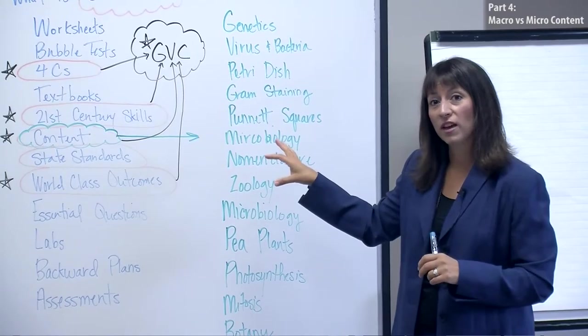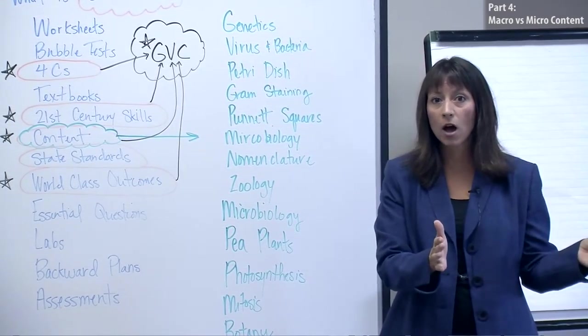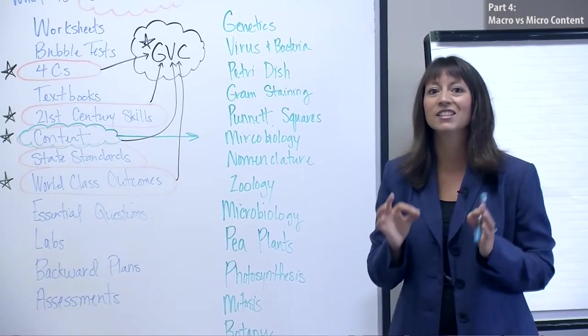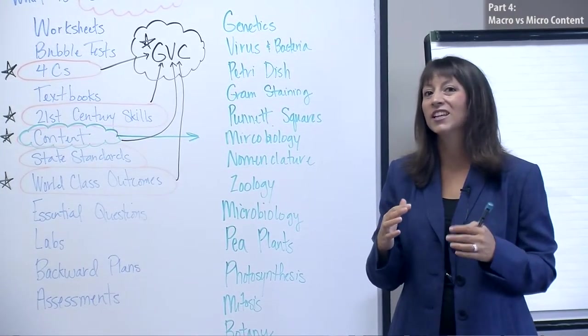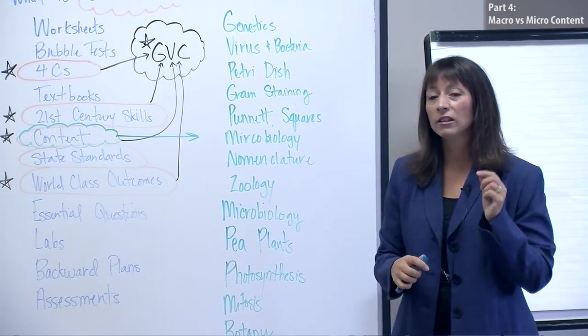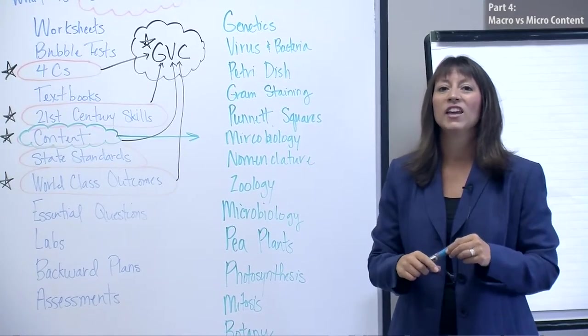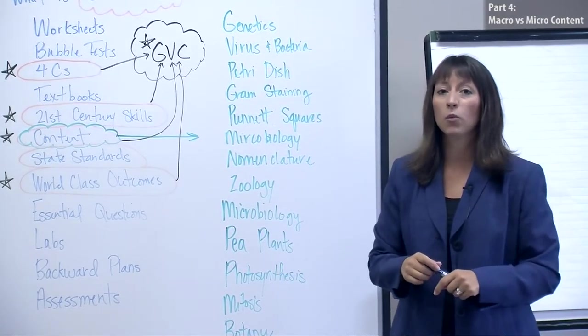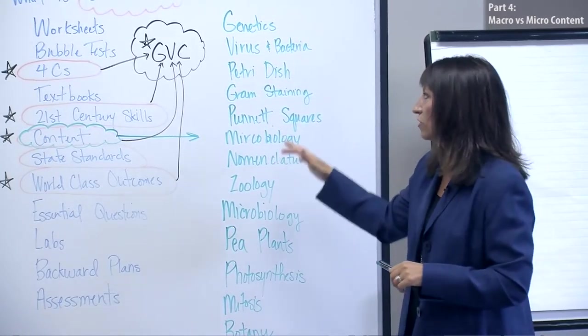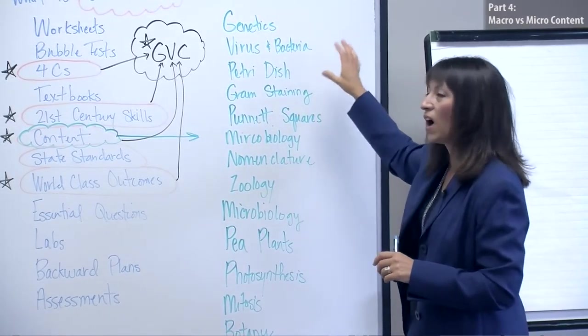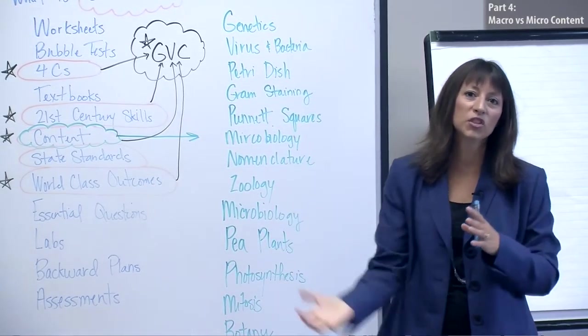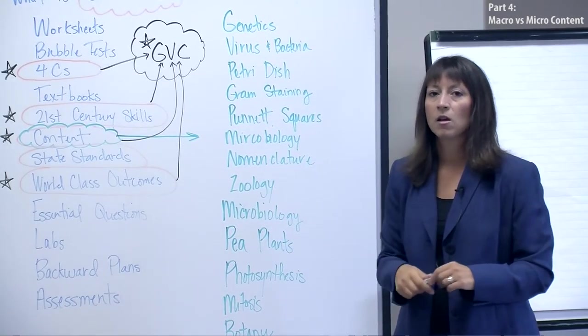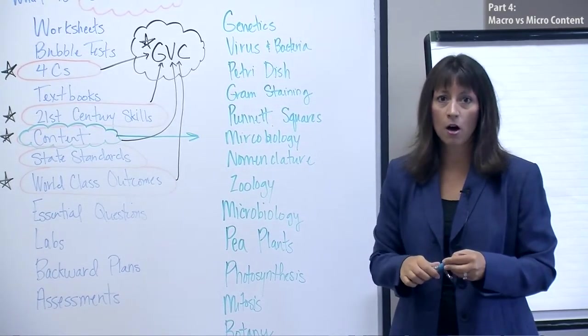The next piece of this work that we're going to do with them is to organize their lists into what they perceive to be macro concepts and micro concepts. We're doing this because the minutia of the micro concepts gets in the way of unit design. If they're focusing on every spelling word and every vocabulary word and every little tiny detail, they get lost in the forest. So we need to help them organize into bigger conceptual ideas that we call macro content.